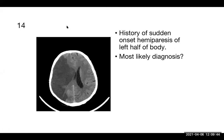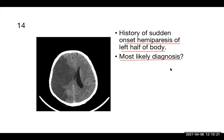Case fourteen: sudden onset hemiparesis of the left half of the body. Correlating with the CT scan, this is an ischemic stroke. The CT shows a hypodense lesion — ischemia appears hypodense on CT, whereas hemorrhage appears hyperdense (white). This is a case of cerebral infarction of the right hemisphere, confirmed by the hypodense CT lesion combined with contralateral left-sided hemiparesis.